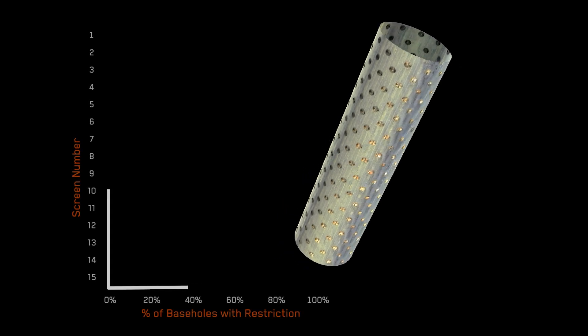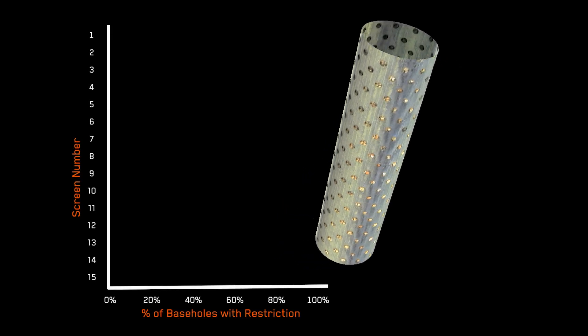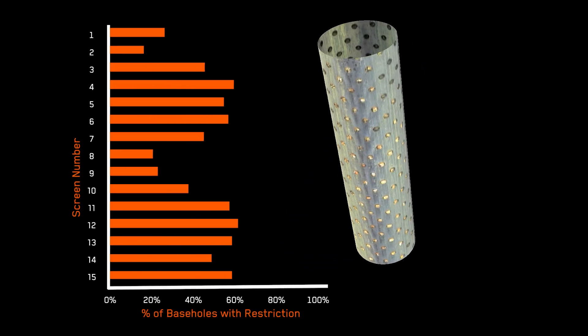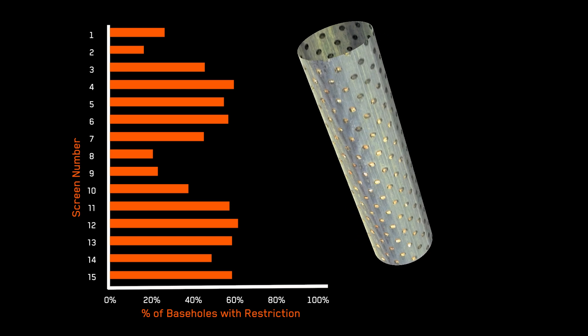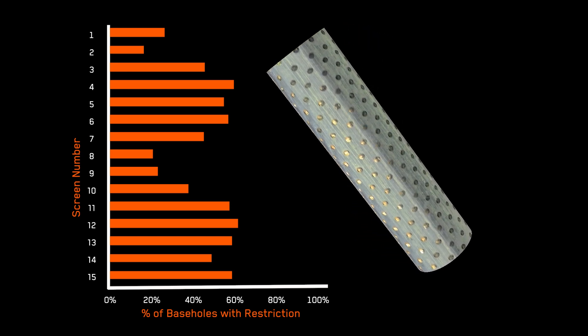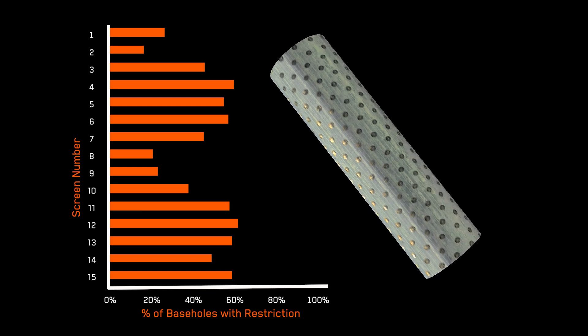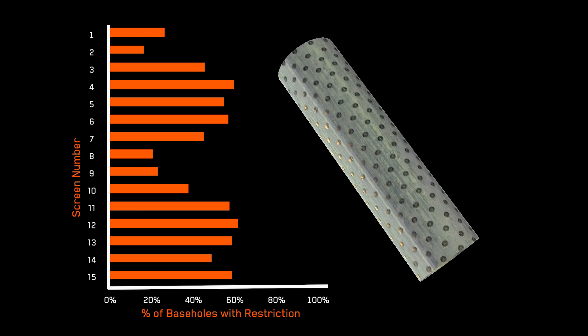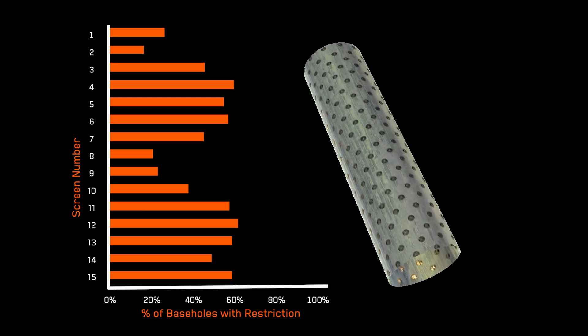EV's Sand VA analysis was applied to the camera footage to provide a quantitative evaluation of screen integrity and inflow performance. The data confirmed that all screens evaluated had restricted flow areas, with between 20% and 65% of the base holes blocked per screen, many of which were too clogged to flow.